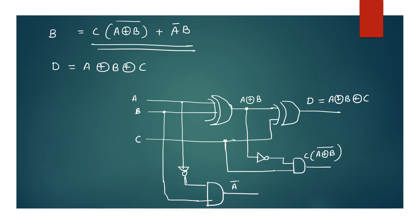This is A-bar, B-bar. If we add A-bar, B-bar — B equals C into exclusive-OR B, all bar, plus A-bar B.